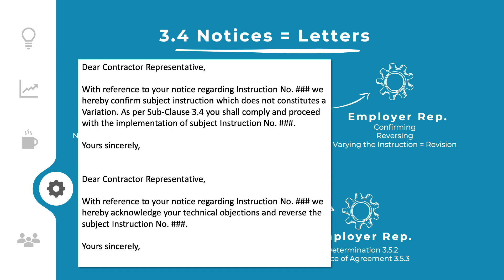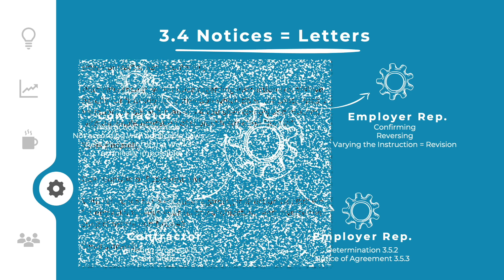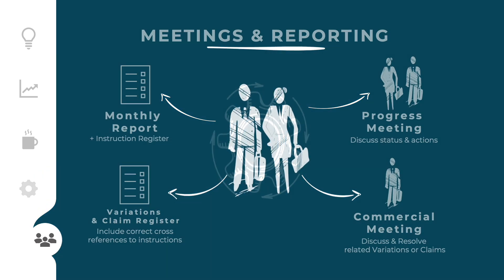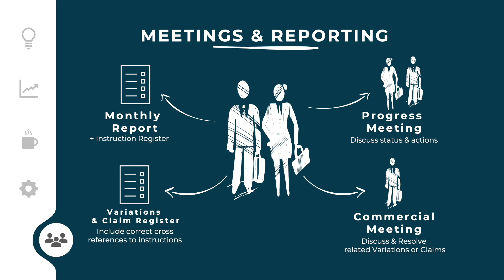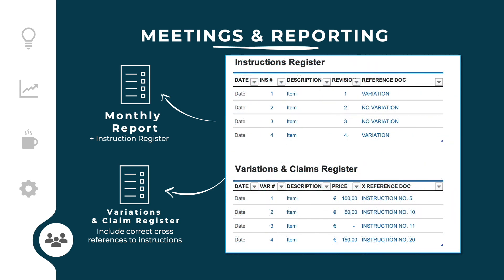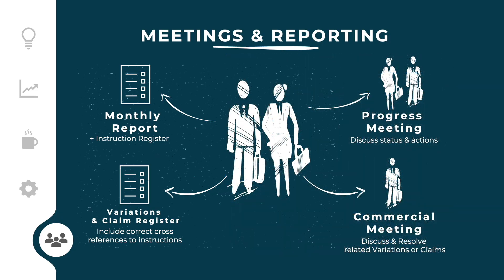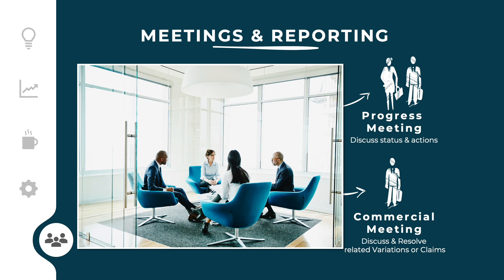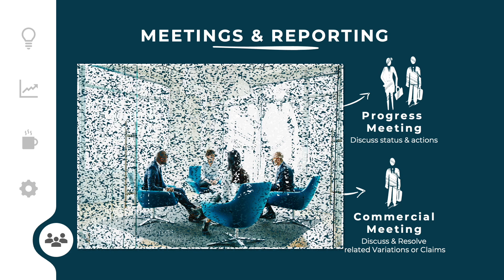For good contract management, it is recommended to prepare a set of standard letters and notices which support timely responses. To manage and control the instructions, the contractor shall prepare and maintain an instruction register, which shall be included in the monthly progress report. The contractor shall also prepare and maintain a variation and claims register, and clearly indicate which instruction is related to which variation or claim. The parties shall conduct regular progress meetings in which the completion status of instructions is discussed and execution issues are resolved. Regular commercial meetings shall also be held in which instruction-related variations and claims are discussed and resolved.